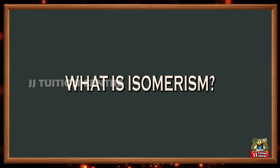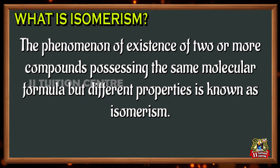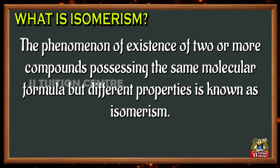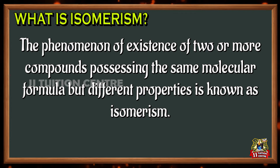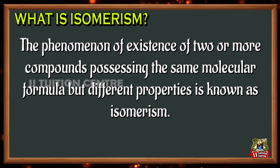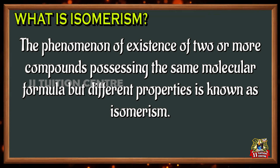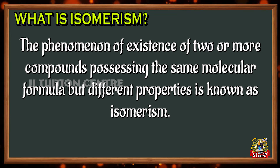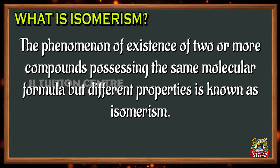First of all, what is isomerism? The term isomerism was given by Berzelius and it represents the existence of two or more compounds with the same molecular formula but different structure and properties. The properties mean physical and chemical properties. Compounds exhibiting this isomerism are called isomers. The difference in properties of two isomers is due to difference in the arrangement of atoms within their molecules.